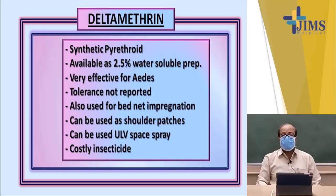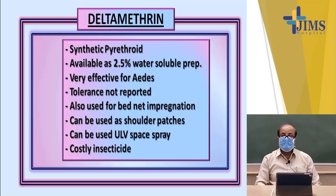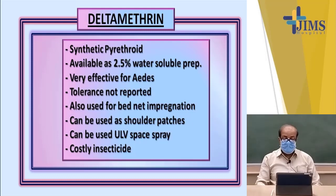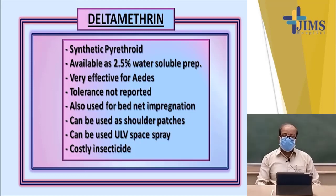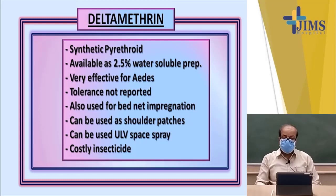Deltamethrin is a synthetic pyrethroid, available in 2.5% water-soluble preparations. It is very useful for killing Aedes mosquitoes and for prevention of dengue, dengue fever, and chikungunya. Tolerance has not been reported for Aedes mosquitoes. It is used for bed net impregnation: one mosquito net is dipped into 11 milliliters of deltamethrin solution in half a bucket of water, then hung in a shaded, airy place for drying. This helps reduce Aedes mosquito populations in the community.